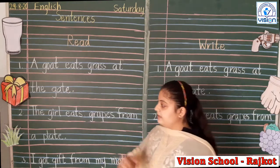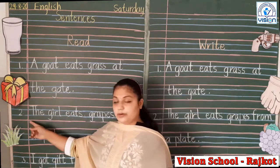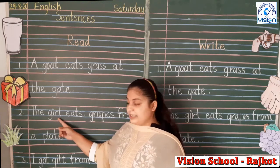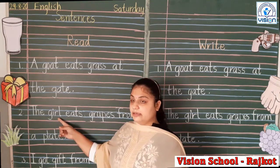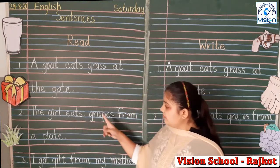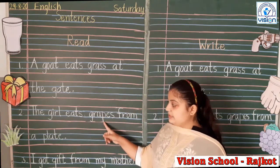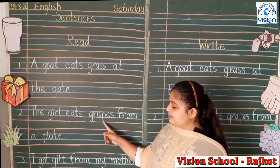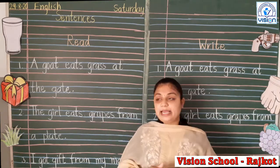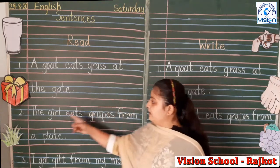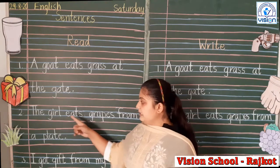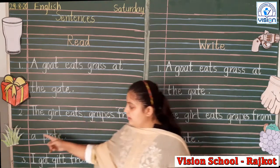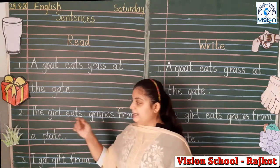Now the second one, number two. 'The girl' — G-I-R-L — 'eats grapes' — G-R-A-P-E-S. See, here's a picture of grapes. 'The girl eats grapes from a plate.'